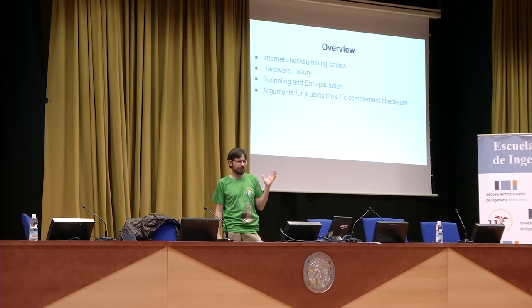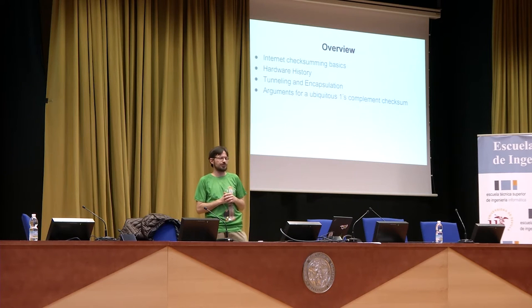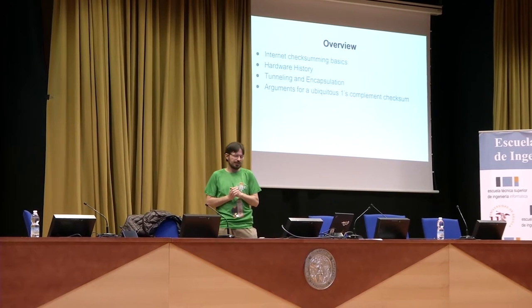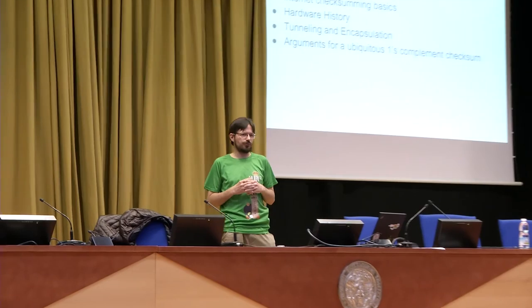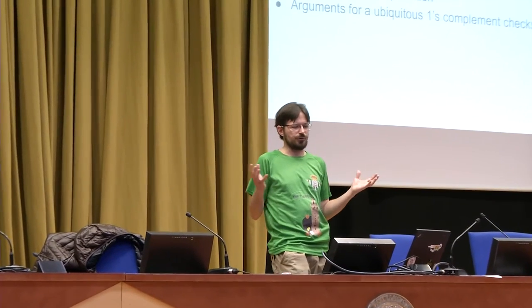So first, we're going to talk about how internet checksumming works. We're going to go through the history of how hardware has been implemented over time, the features that have shown up and whether they're good or bad or how they help us or don't help us. Then we're going to talk about how tunneling and encapsulation interacts with all of these issues, and then we're going to make an argument for having ubiquitous ones complement checksum facilities in hardware and why that's what we want from the NICs out there.